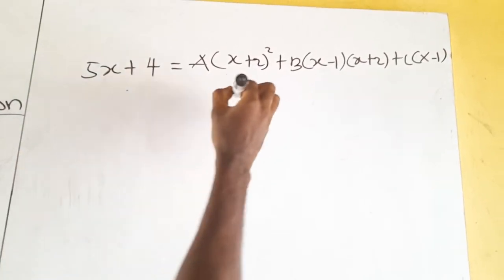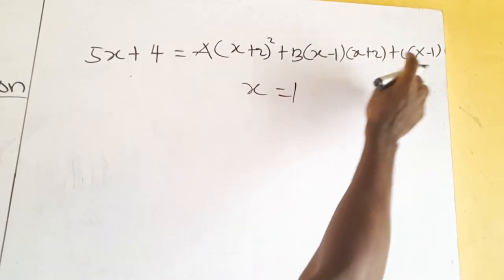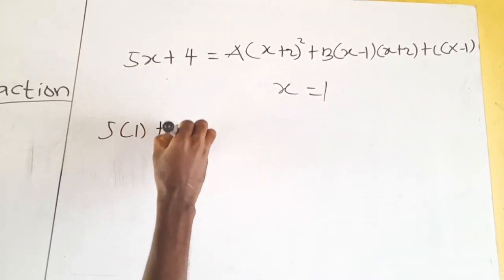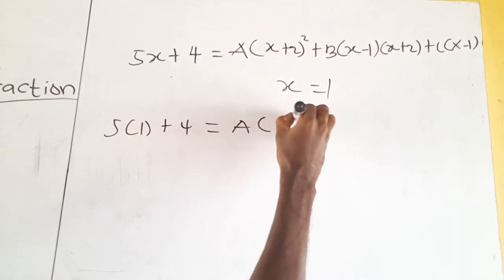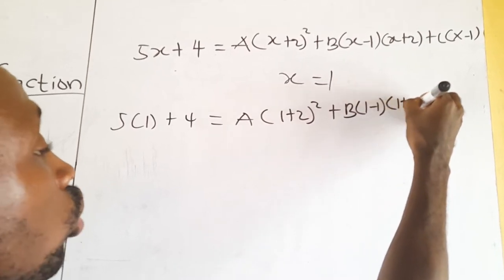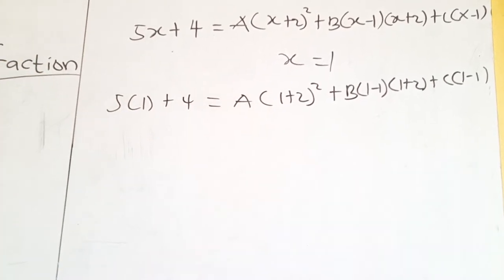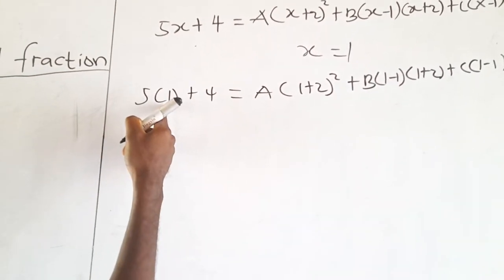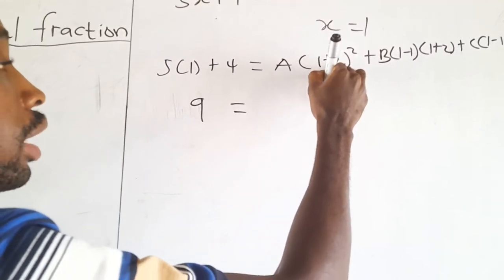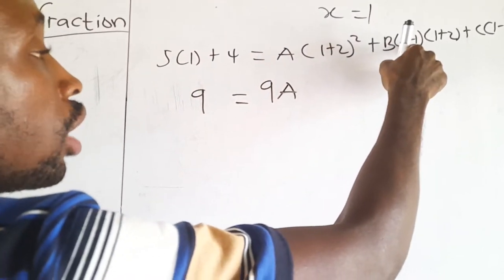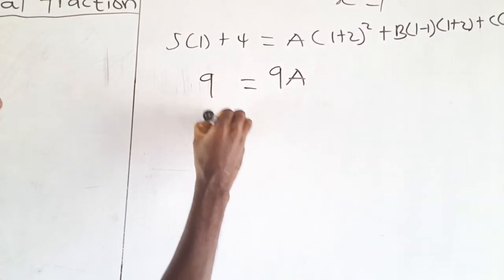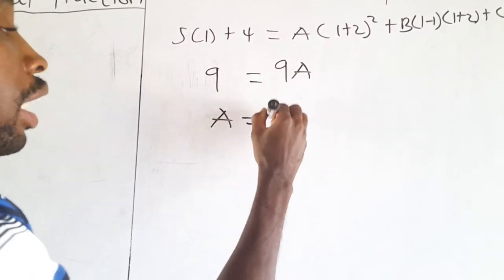We equate numerators: 5x + 4 equals A(x + 2)² plus B(x − 1)(x + 2) plus C(x − 1). To find A, we let x equal 1: 5(1) + 4 = A(1 + 2)², giving 9 = 9A, so A equals 1.